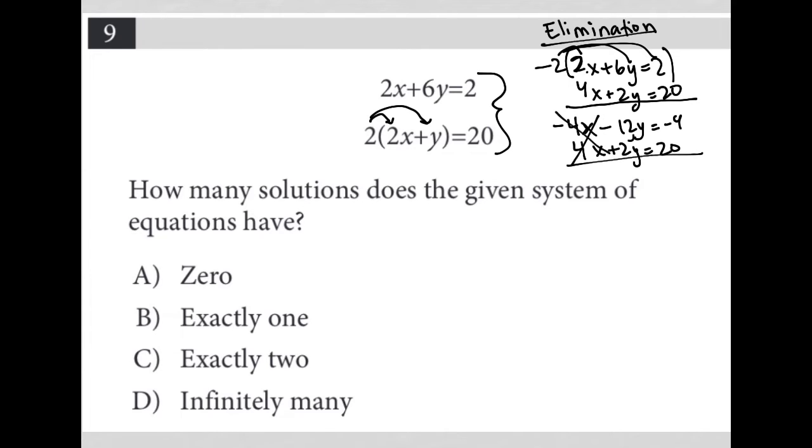Now I can eliminate the x term. -12y + 2y = -10y, and -4 + 20 = 16. When I divide both sides, I get y = -1.6.